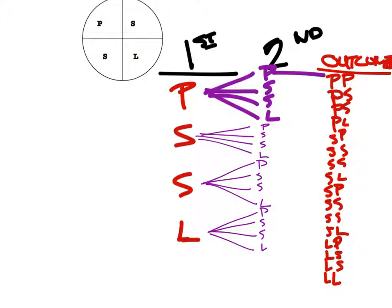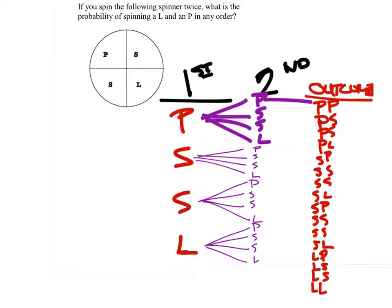Now this one, specifically, what is the probability of spinning an L and a P in any order? Well, we need to find all of the outcomes that have an L and a P. Here's one, and here's another one. I don't see any other ones, and that's okay.